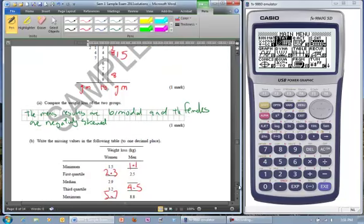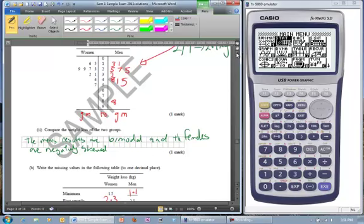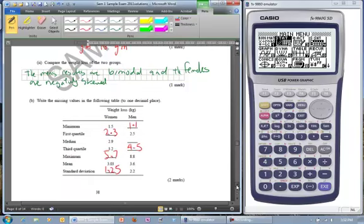Part A part 2 says compare the weight loss of the two groups. The men's results seem to be bimodal, bimodal means there are two distinct areas. And the females one is negatively skewed because that has been pushed that way. Only worth one mark so just talk about bimodal and the skewness would be good.